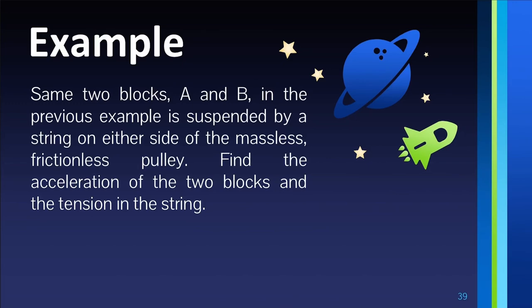Let's solve this problem using the same two blocks mentioned in the previous example. Same two blocks A and B — block A was 12 kg and block B was 30 kg. These same two blocks are suspended by a string on either side of a massless, frictionless pulley. Find the acceleration of the two blocks and the tension in the string.